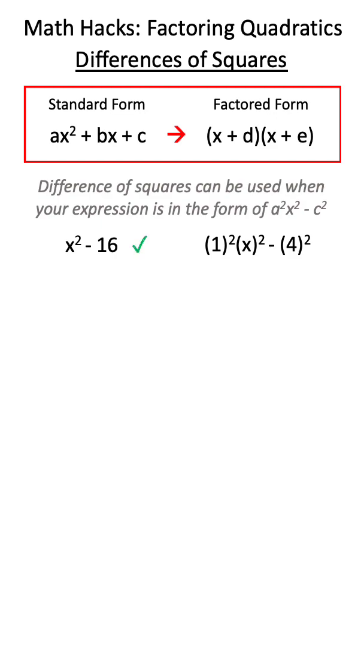There's a few things to look out for that will immediately disqualify you from using this method. For example, if there is a b term, this cannot be done through difference of squares. Additionally, if you have a positive c term, this will also rule out this method.